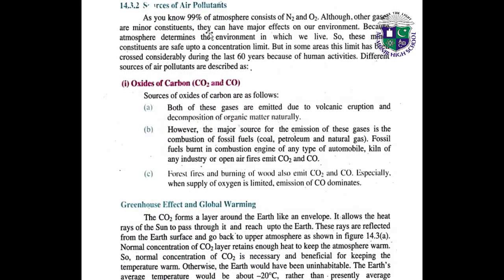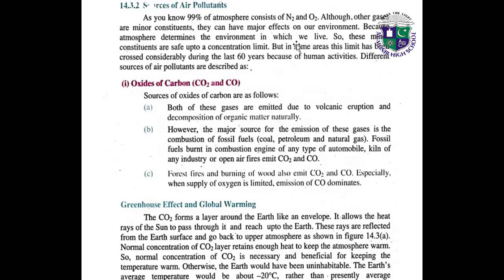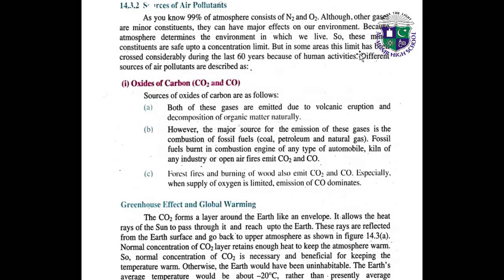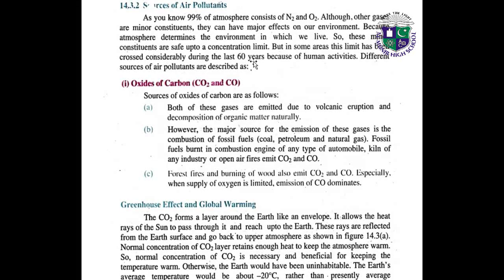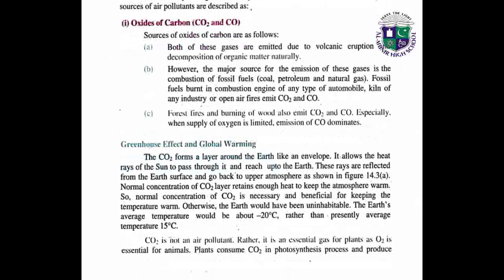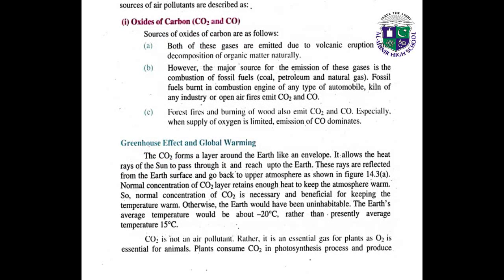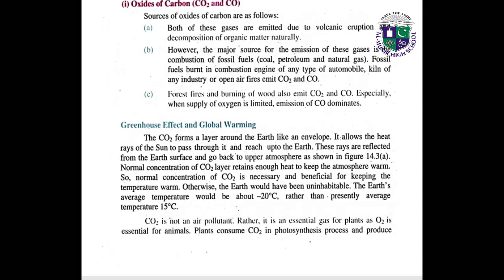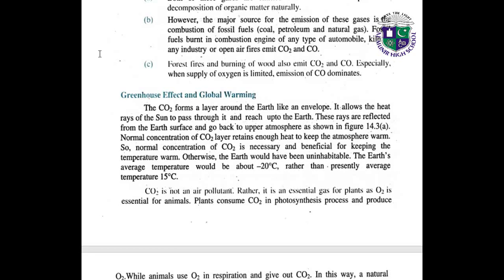Sources of air pollutants. As you know, 99% of the atmosphere consists of N2 and O2. Although other gases are minor constituents, they can have major effects on our environment. Because the atmosphere determines the environment in which we live, these minor constituents are safe up to a concentration limit. In some areas, this limit has been crossed considerably during the last 60 years because of human activities. Sources of oxides of carbon: both CO2 and CO are emitted due to volcanic eruption and decomposition of organic matter naturally. However, the major source is the combustion of fossil fuels — burned in combustion engines of automobiles, chimneys of industries, and open air fires. Forest fires and burning wood also emit carbon dioxide and carbon monoxide.